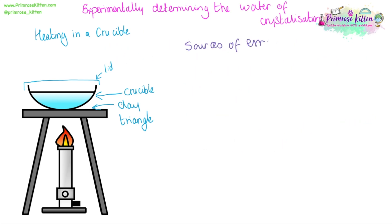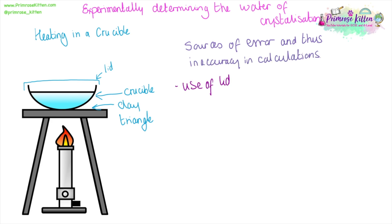There are a number of different ways that errors can creep into this experiment and affect the accuracy of the results — this is a common exam question. Using a lid will stop us potentially losing any solids, since when heating vigorously, solids can spit out. However, if the lid is on too tightly, that can actually prevent water being lost from the crucible, and you will not properly get the anhydrous salt at the end.